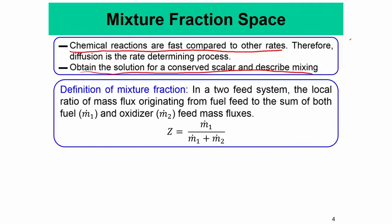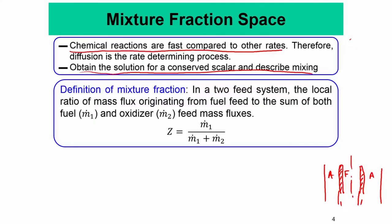What is the mixture fraction? It is defined for a two-feed system. Suppose you have an axisymmetric nozzle: at the center fuel comes out, and through an annular cylinder on the sides air comes out. That is a two-feed system — one feed line of fuel and one feed line of air, not mixing upstream. The mixture fraction is defined as the local ratio of mass flux originating from the fuel feed to the sum of both the fuel and oxidizer feed mass fluxes.